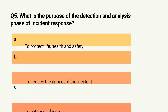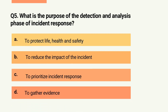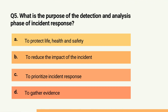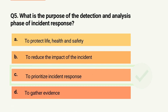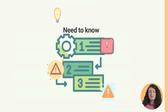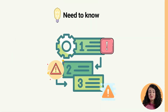Question 5. What is the purpose of the detection and analysis phase of incident response? A. To protect life, health and safety. B. To reduce the impact of the incident. C. To prioritize incident response. D. To gather evidence. The correct answer is C: to prioritize incident response. As per ISC2 material, the purpose of the detection and analysis phase is to prioritize incident response.